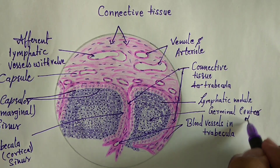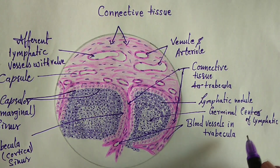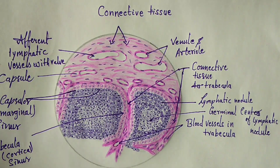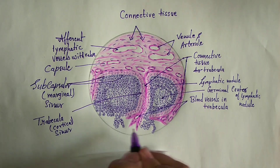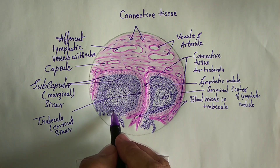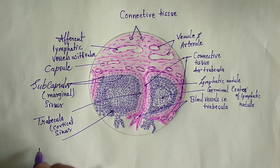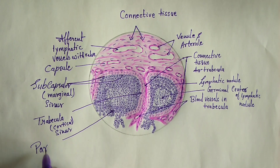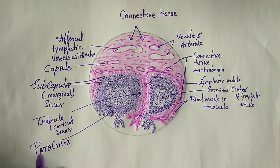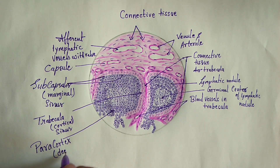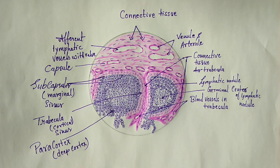Here is the germinal center of lymphatic nodules. The paracortex, also known as the deep cortex, is the deep portion of the lymph node cortex. This area is the thymus-dependent zone and is primarily occupied by T cells.